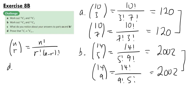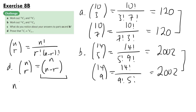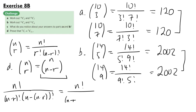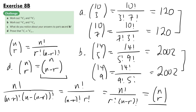Part D says prove that N choose R is equal to N choose N minus R. If we use the formula to work out what N choose N minus R is, we get N factorial over N minus R factorial times N minus (N minus R) factorial, which simplifies to N minus N plus R, so just R factorial. And that we know is equal to N choose R from the NCR formula. So we've shown that N choose N minus R is equal to N choose R, as required.